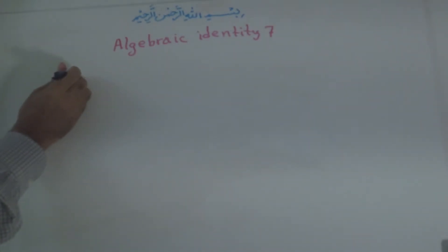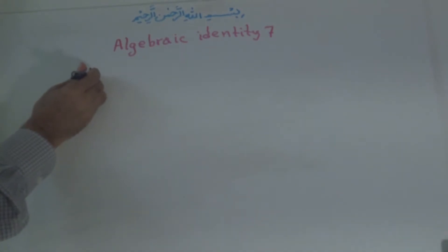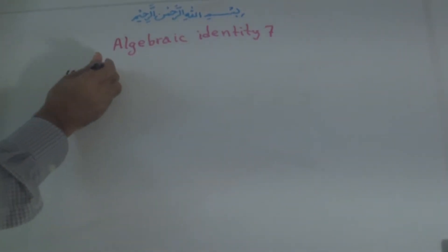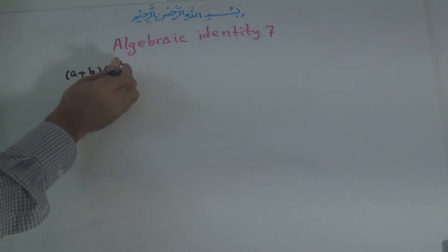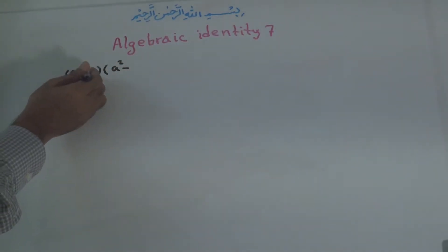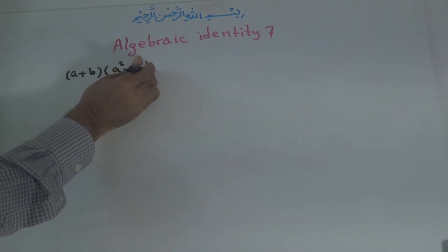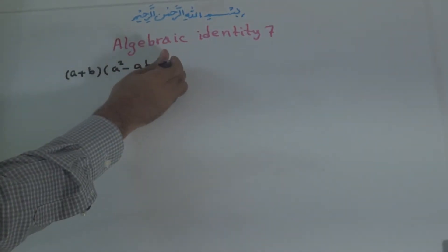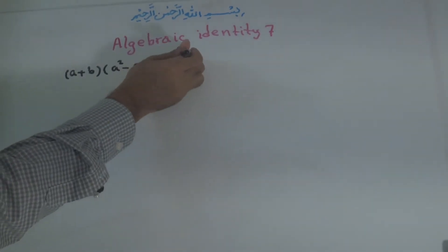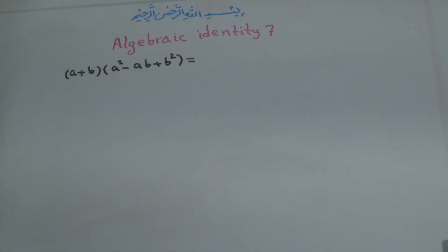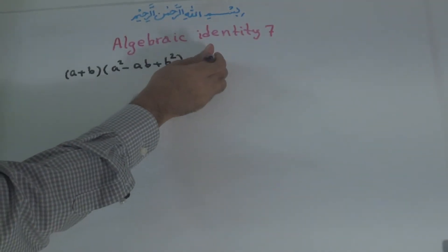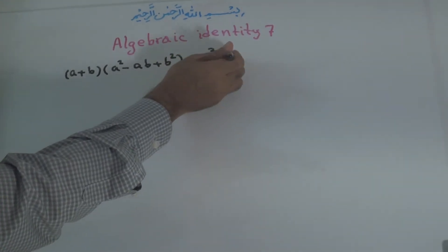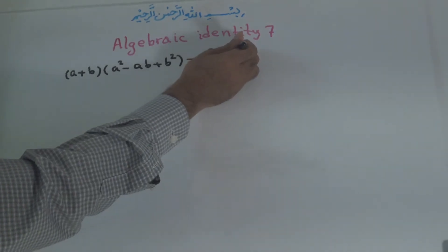This identity is a binomial A plus B times the trinomial whose first term is the square of the first term, the second term is minus AB, and the last term is the square of the second term, B to the power of 2. The result will be A to the power of 3 plus B to the power of 3.